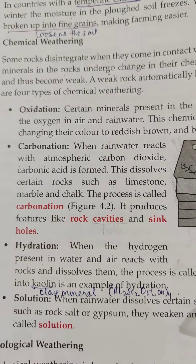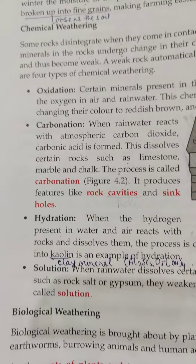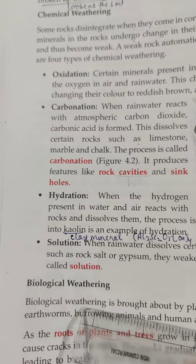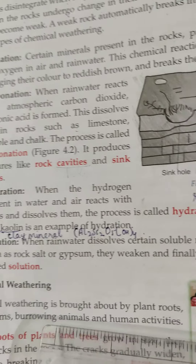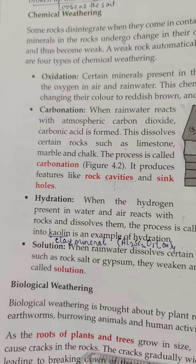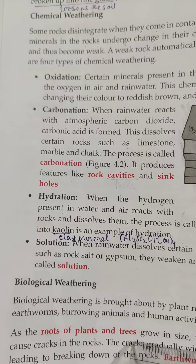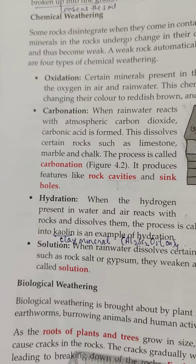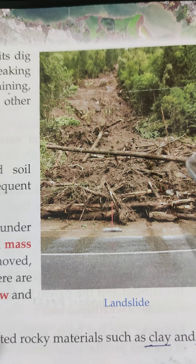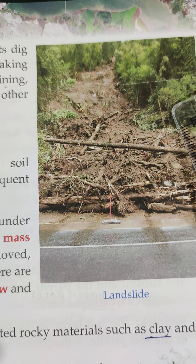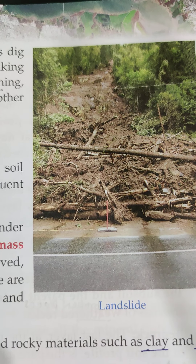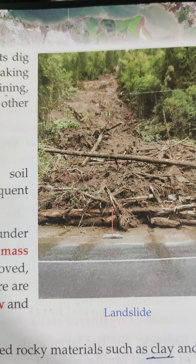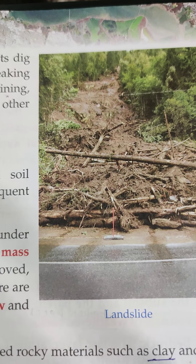Biological weathering is brought about by plants and animals. Roots of plants grow in size and can cause rocks to crack. Burrowing animals dig the soil, loosen the rocks, and this also ultimately leads to the breaking of rocks.